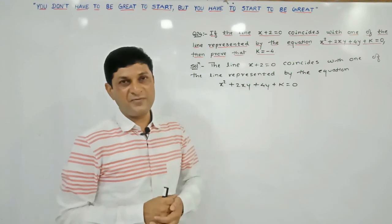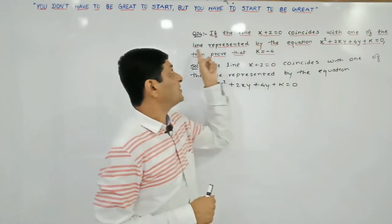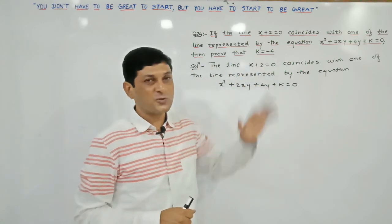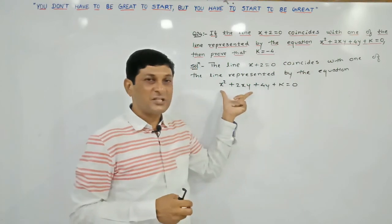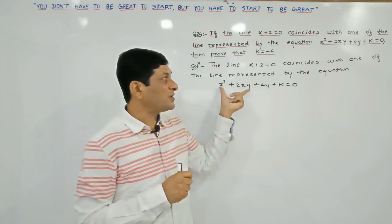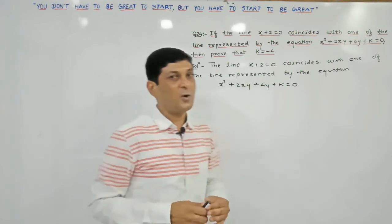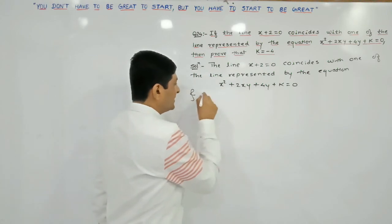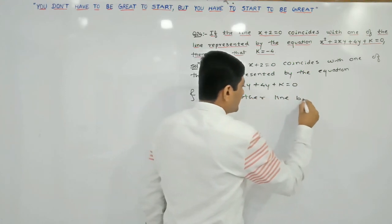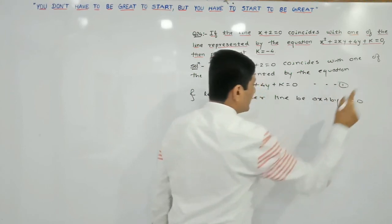See example number 24. In this example, the given condition is: if the line x plus 2 equals 0 coincides with one of the lines represented by this equation, we have to prove that k equals minus 4. Observing the given equation, it is the general equation of second degree in x and y. We suppose the other line to be ax plus by plus c equals 0 — denote this as equation number one.